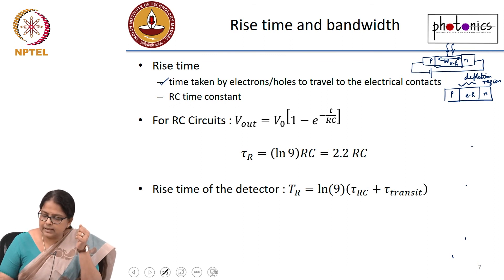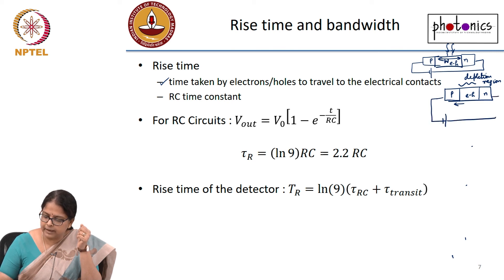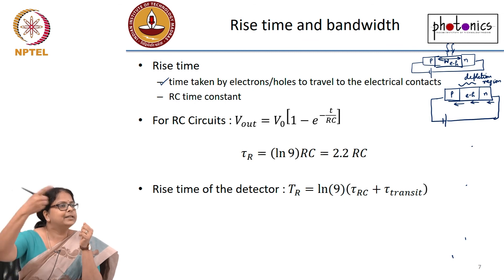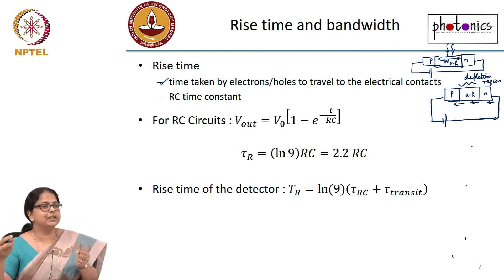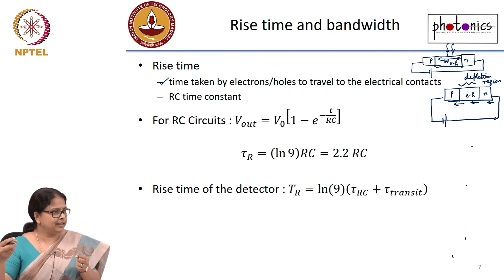These electron-hole pairs have to travel through the depletion region, through the p region, and go out. Of course, the conducting path will not take a lot of time, but they also have to travel through the n region and come back to complete one transit. Again, it is reverse biased.